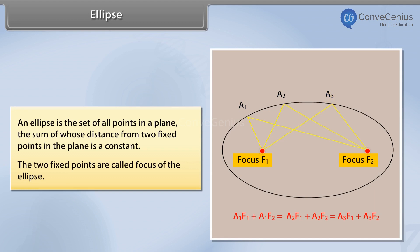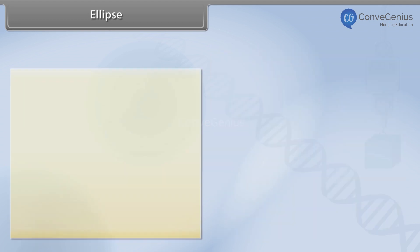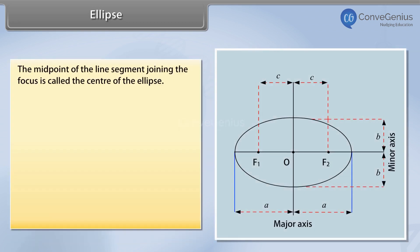The two fixed points are called the foci of the ellipse. The midpoint of the line segment joining the foci is called the center of the ellipse.